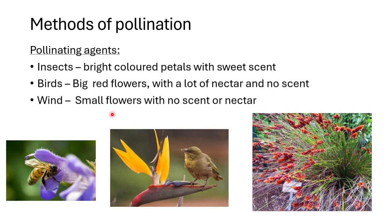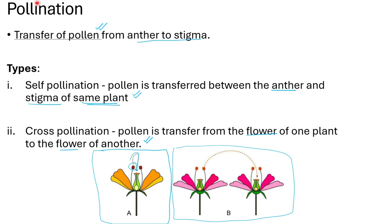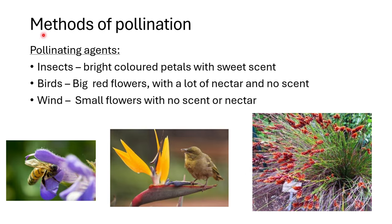You may wonder how pollen moves, since pollen is not mobile — it cannot move on its own. It is not an animal with wings. There are three methods of pollination, carried out by what we call pollinating agents: birds, insects, and wind. These are the things that assist with transferring pollen from anther to stigma.